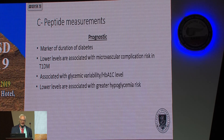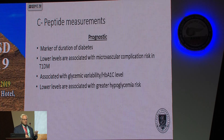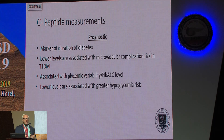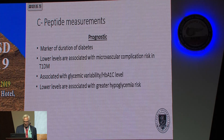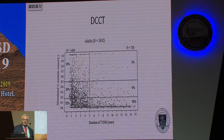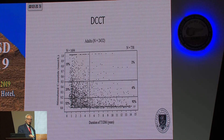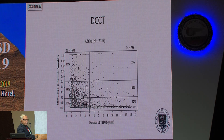But what C-peptide levels can do is act as a prognostic indicator — a marker of diabetes. Lower C-peptide levels are associated with higher microvascular complications of type 1 diabetes, higher glucose variability, higher A1C, and higher hypoglycemia recurrence. The DCCT trial looked at patients with type 1 diabetes and found that most patients with diabetes for less than 2 years had C-peptides less than 0.5, and 90% of those who'd had diabetes for 5 years had C-peptides less than 0.2.